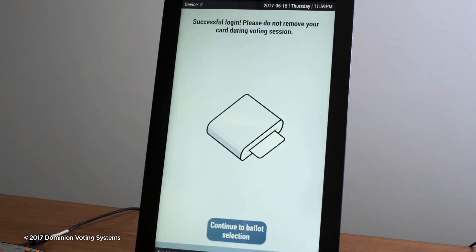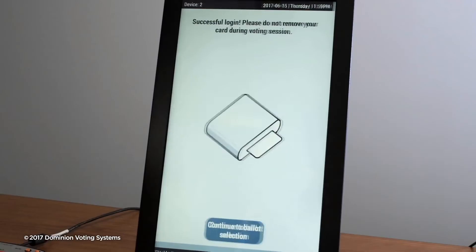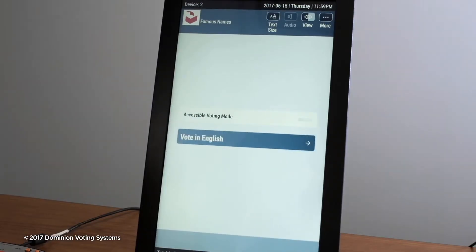Upon voter authentication, the ballot language selection screen appears with the Accessible Voting Mode switch. Touch the Accessible Voting Mode button.